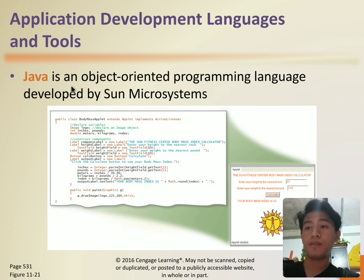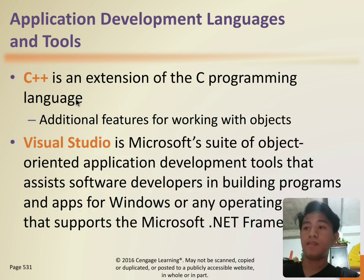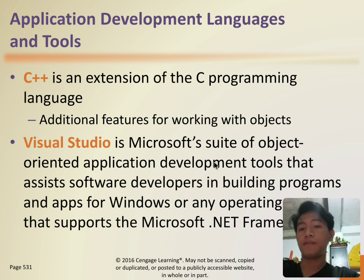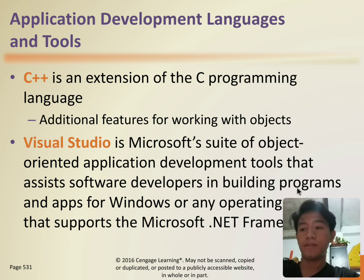Most object-oriented application development tools are IDEs, or integrated development environments. Java is an object-oriented programming language developed by Sun Microsystems. C++ is an extension of the C programming language. Visual Studio is Microsoft's suite of object-oriented application development tools that assist software developers in building programs and apps for Windows or any operating system.